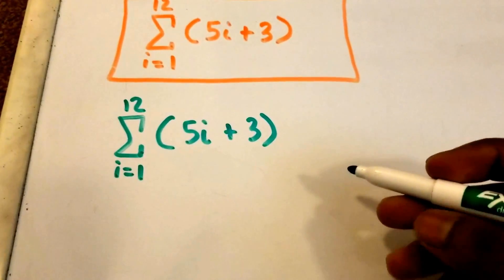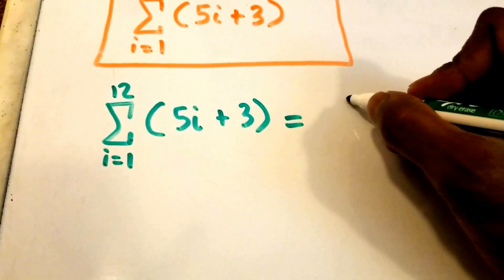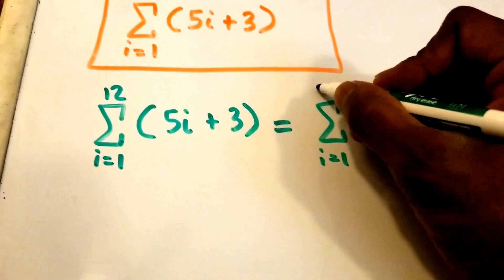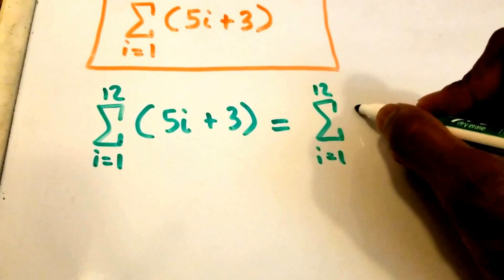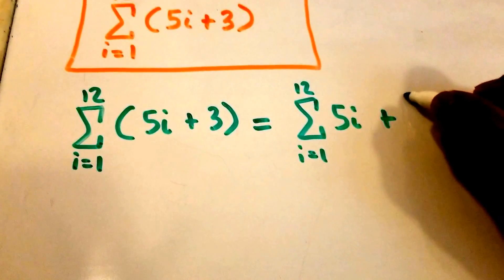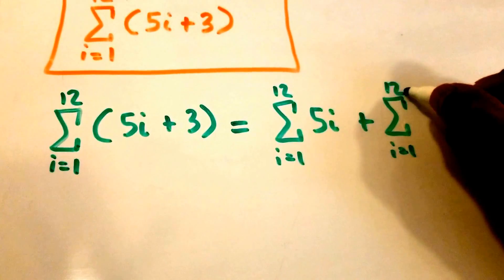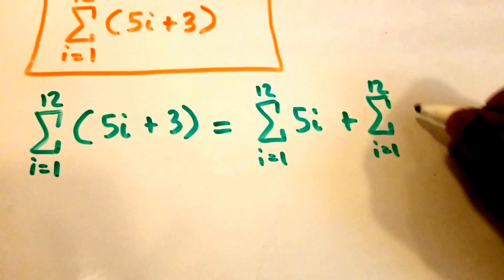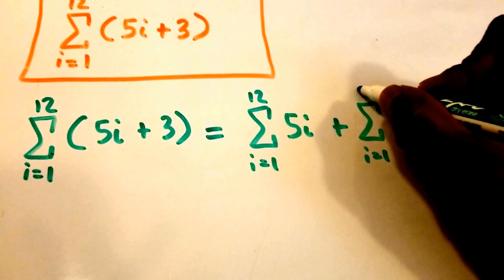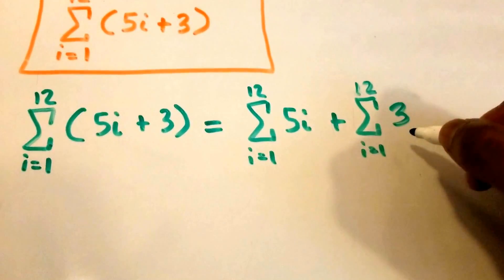Now what we're going to do is split this up using the summation properties. So we're going to get the summation from i equals 1 to 12 of 5 times i, plus the summation from i equals 1 to 12 of 3.